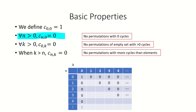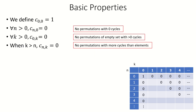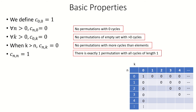Next, let's add another basic property: c sub n n equals 1, because it corresponds to using all cycles of length 1. That's the permutation that does not rearrange our list at all, as all elements are mapped to themselves. This tells us that the main diagonal entries are all equal to 1 in our table.